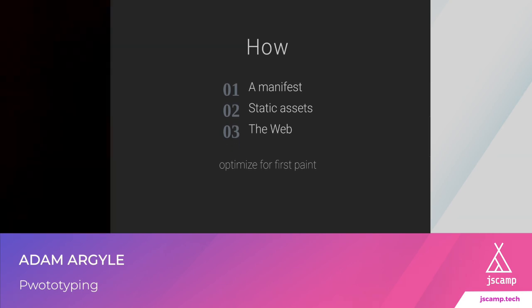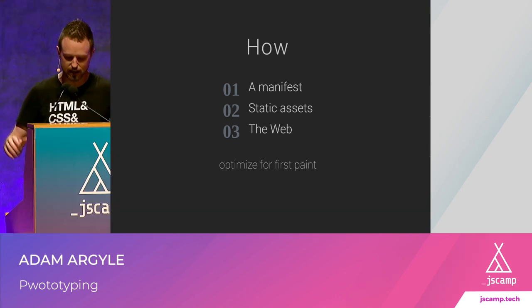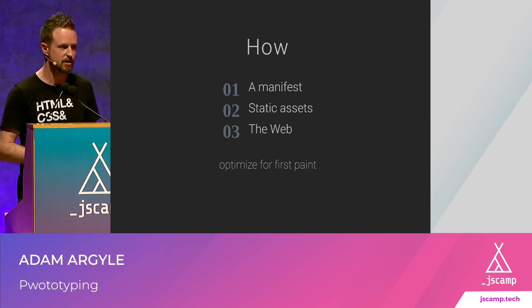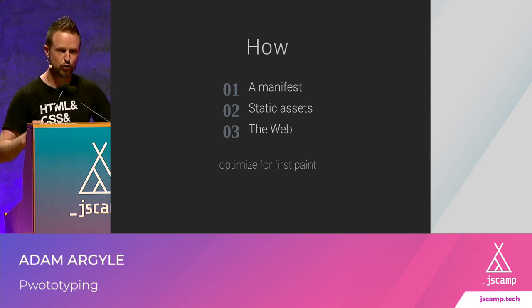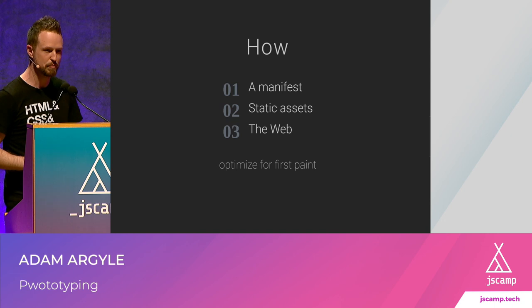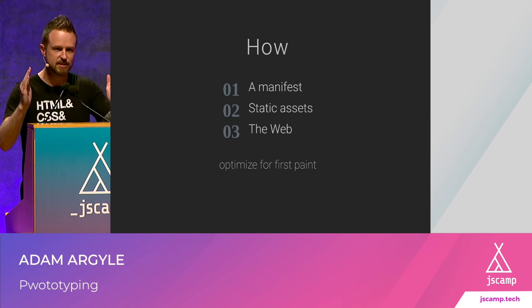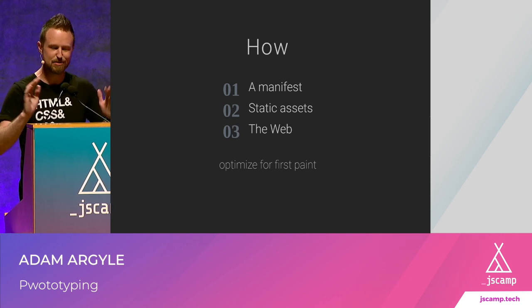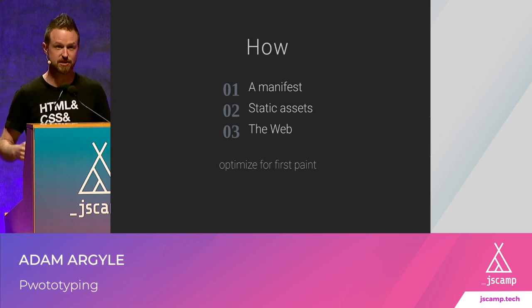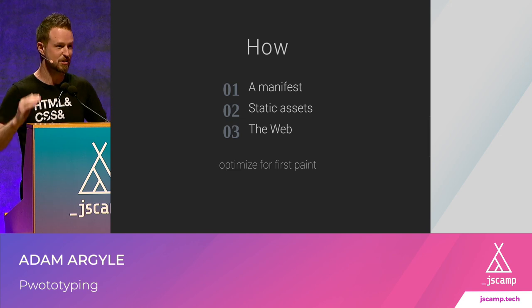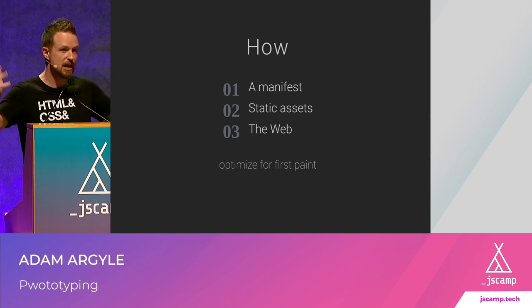How are we going to do it? We're going to use a manifest — that's how PWAs begin. We're going to make as much as possible static, and then use the web. The web has tons of great stuff in it and we're going to optimize as much as we can. The crucial performance goal is optimizing for first paint — meaning the browser painting what it downloaded — everything we're doing today is so that first paint happens within about 30 milliseconds, sometimes faster. It's going to be so fast that the browser will blow away a page and paint a new one faster than a single-page app might.